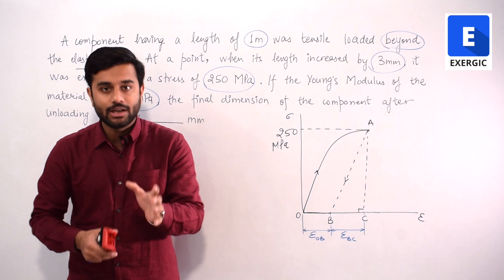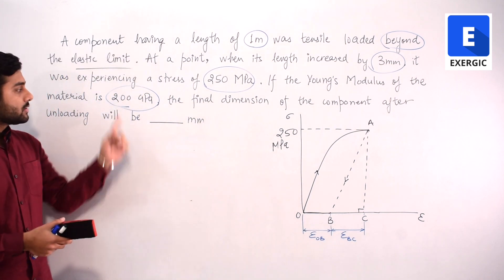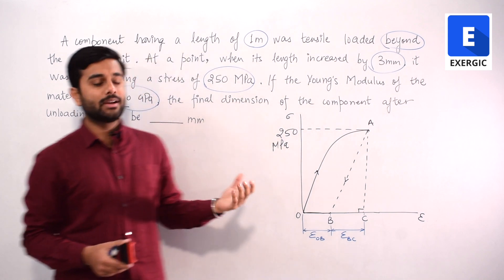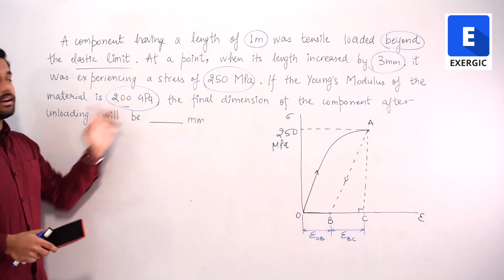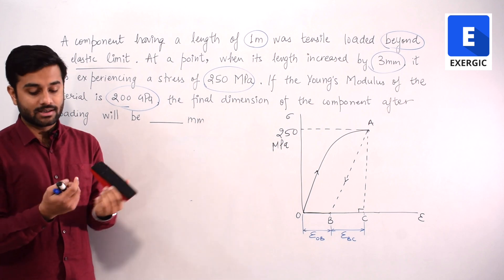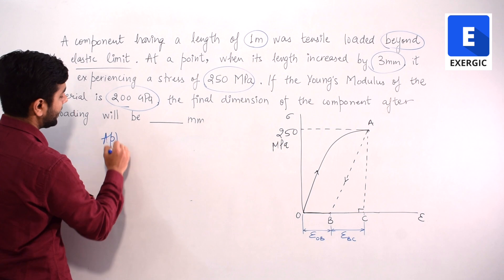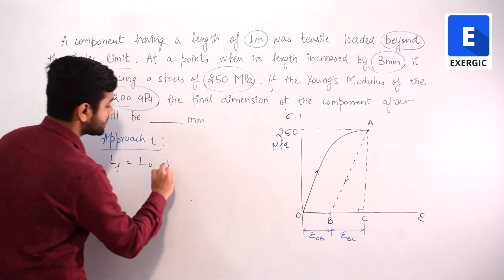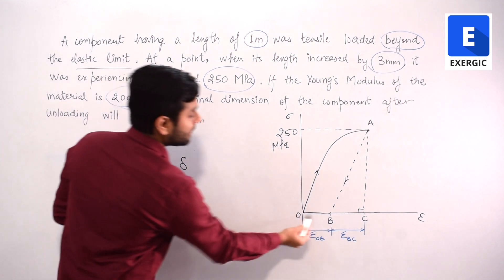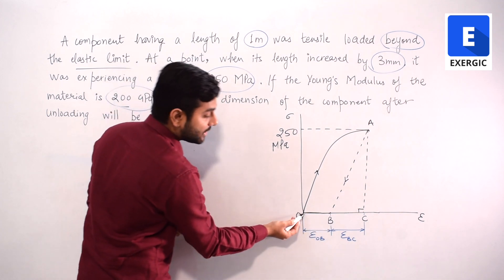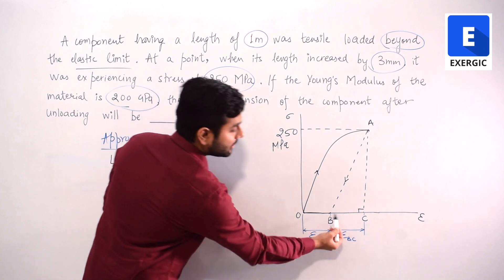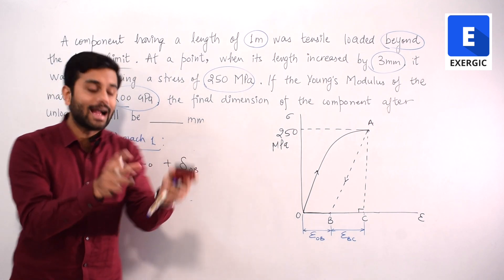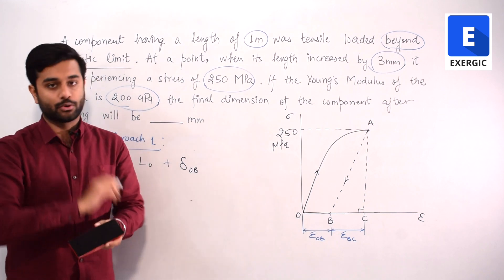I've made a slight change: the value of Young's modulus has been set to 200 GPa instead of 300 GPa, just to simplify the calculations. The process applies for any value. Now, there are two approaches to find the final dimension. Approach 1: final dimension equals initial dimension plus the permanent set, which is the deformation corresponding to strain OB. Approach 2: final dimension equals the deformed dimension before unloading minus the elastic recovery.